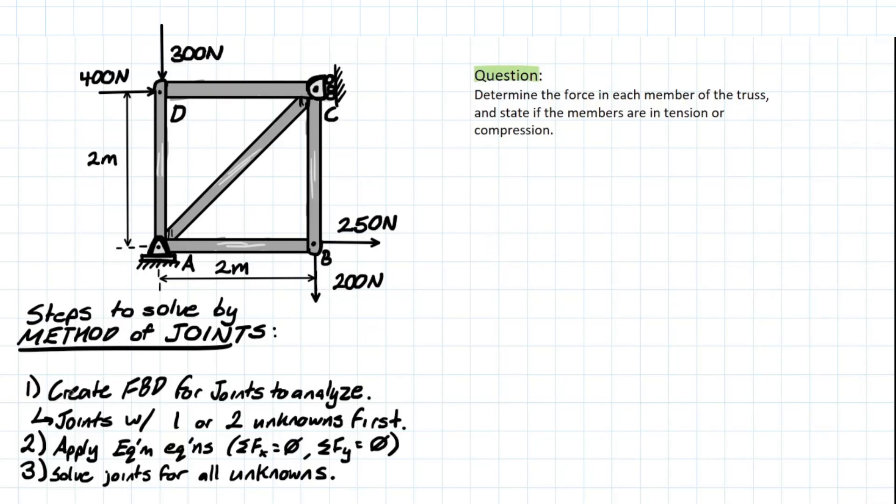So what we're looking for is a step-by-step process on how to solve problems like this. Generally, with methods of joints, we're going to be looking for free body diagrams at these joints. We're looking for joints with forces applied to it, where there may be one or two unknowns. Next, we're going to apply our equilibrium equations from before. We can say that positive will be this way for summation of Fx, and up is positive for forces at y. Solve joints for all unknowns.